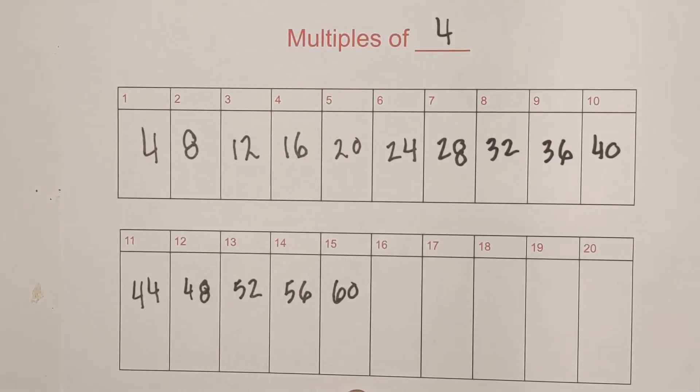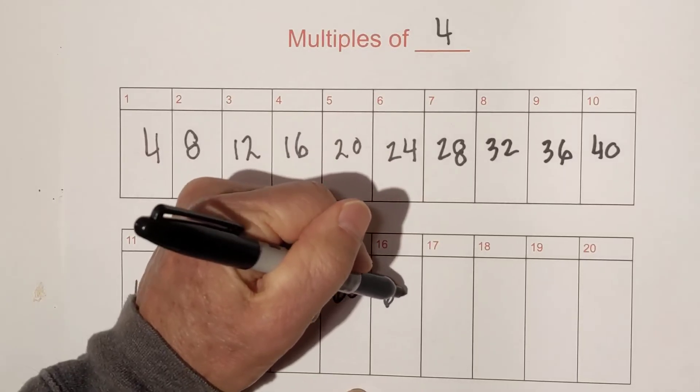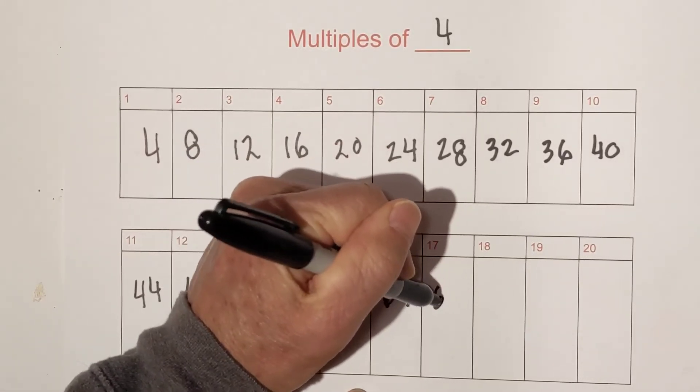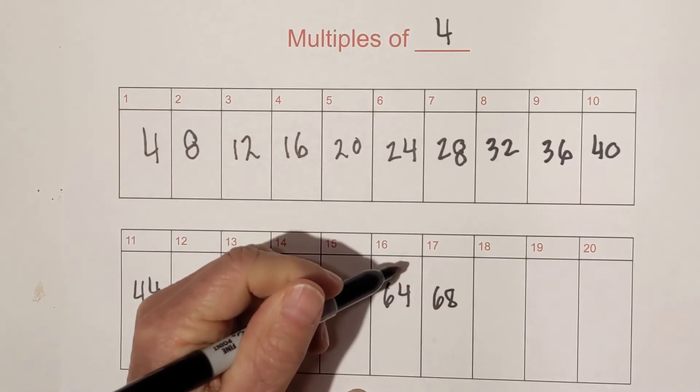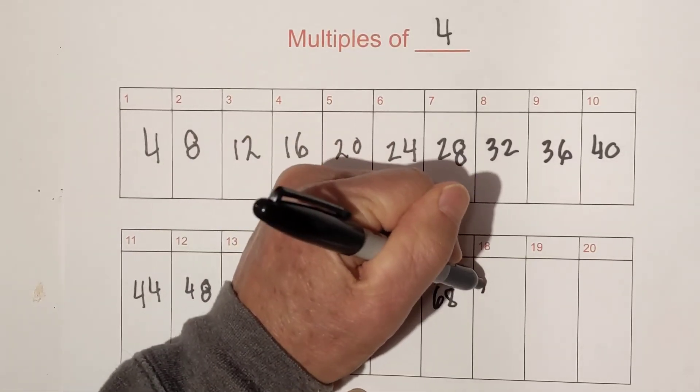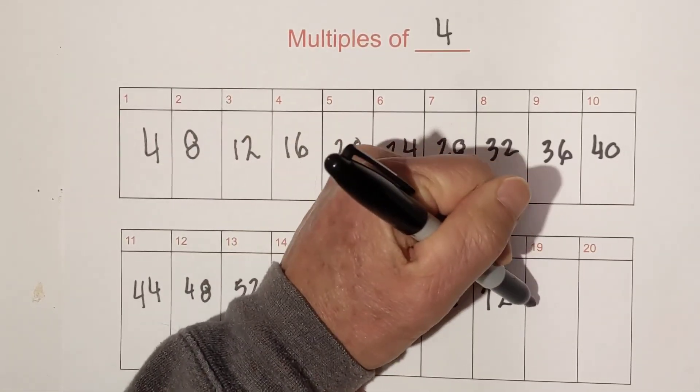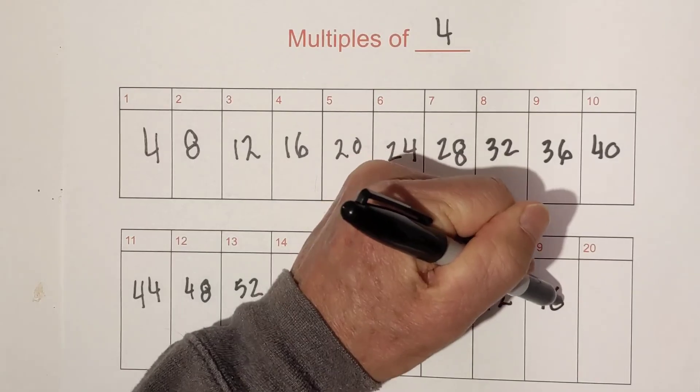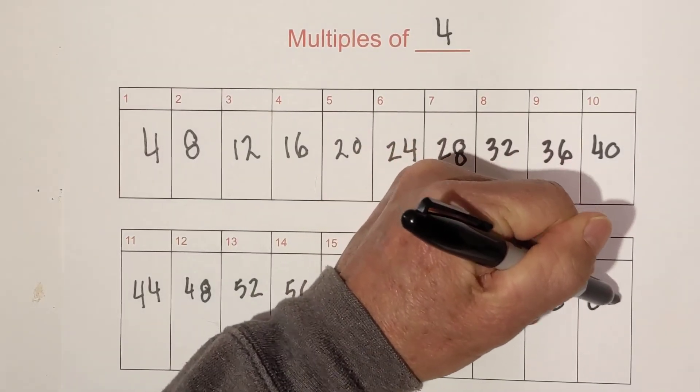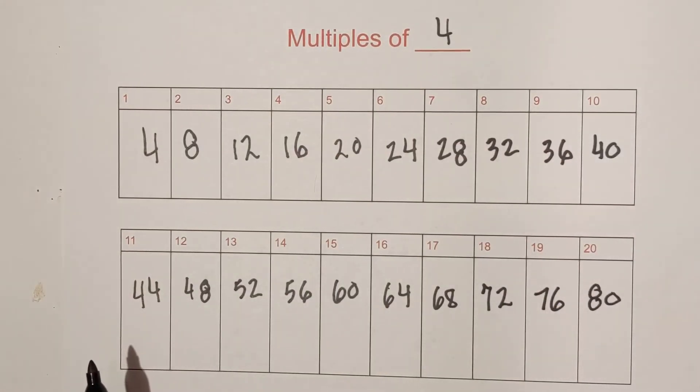Sixty. Fifteen times four is sixty. And now it's going to repeat again. Then we have sixty-four. We have seventeen times four is sixty-eight. Eighteen times four is seventy-two. Nineteen times four is seventy-six. And then we have eighty.